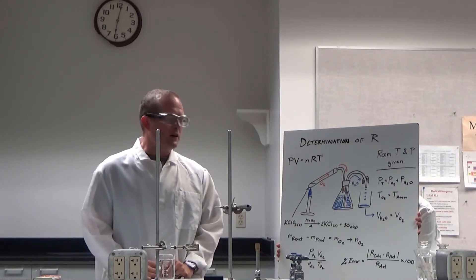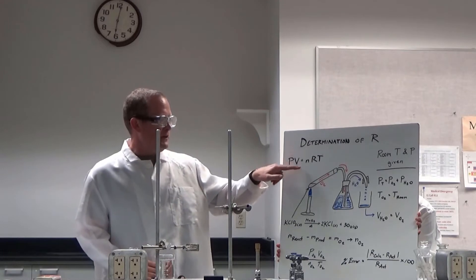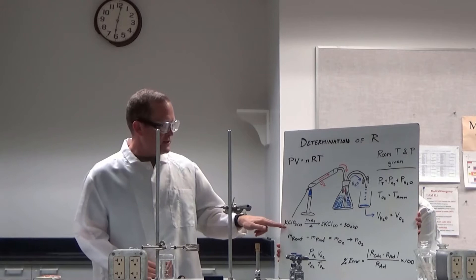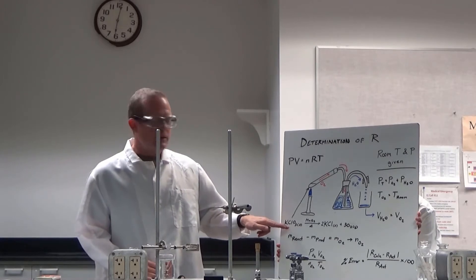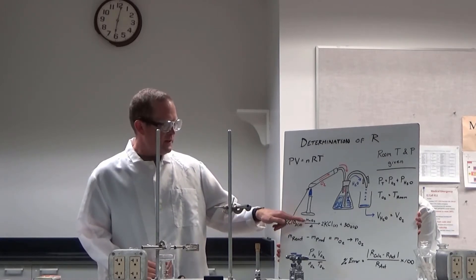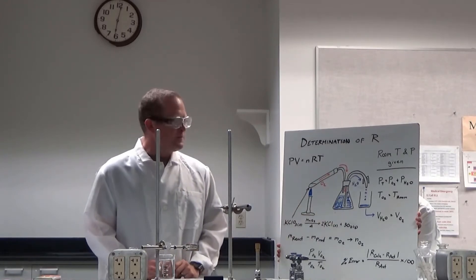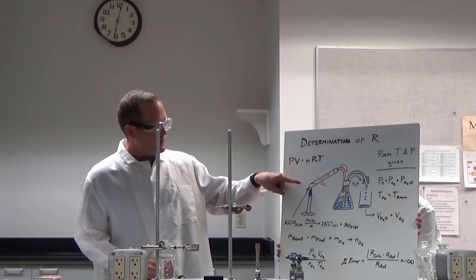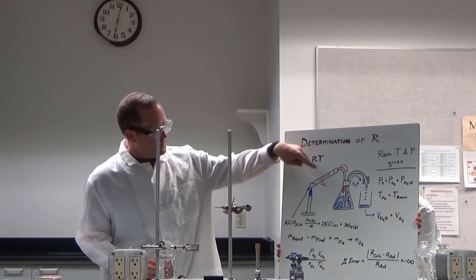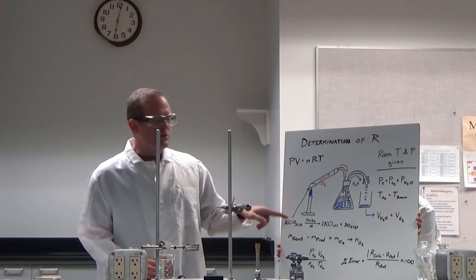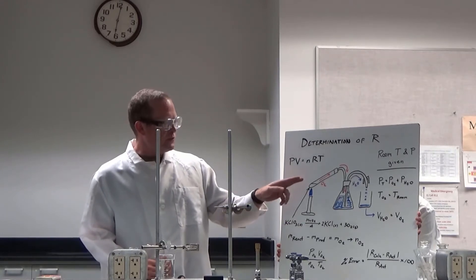So to determine R in the formula PV equals NRT, we will be doing the reaction where potassium chlorate is decomposed with heat and a catalyst to form potassium chloride and oxygen gas. So we'll burn the potassium chloride in an ignition tube here, and when the potassium chloride decomposes, oxygen gas will be produced.